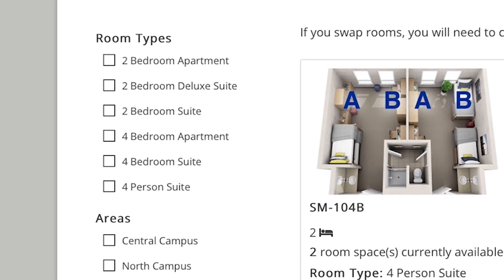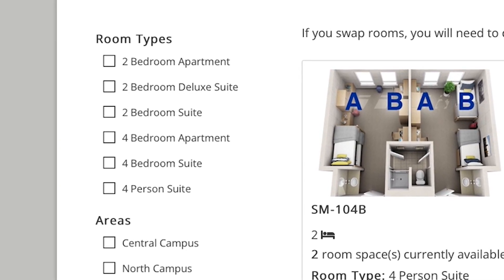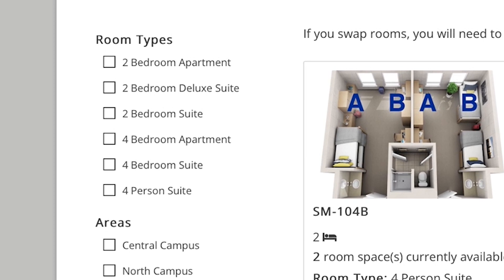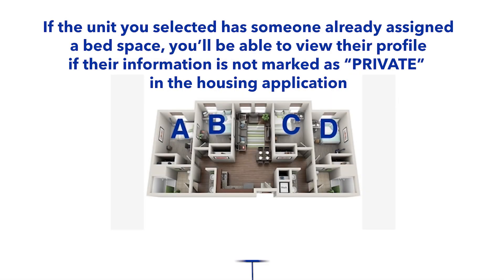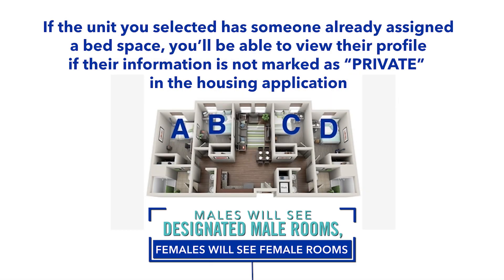Select either the floor or suite that you are interested in. Next, you will select your bed space. Depending on the room type, beds are labeled A through D. These letters indicate the bed space location starting from the left side of the room and working through the alphabet as you move to the right side of the room.